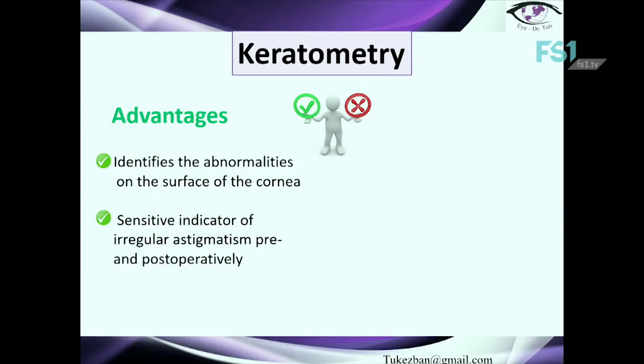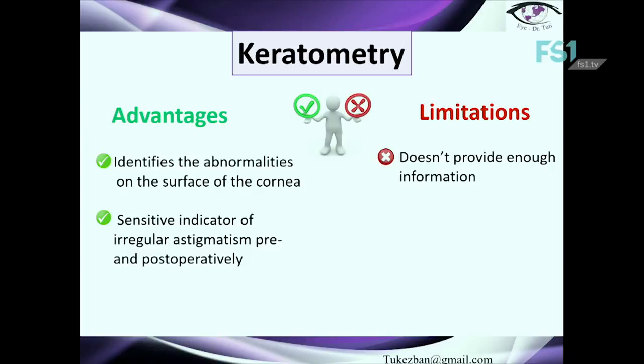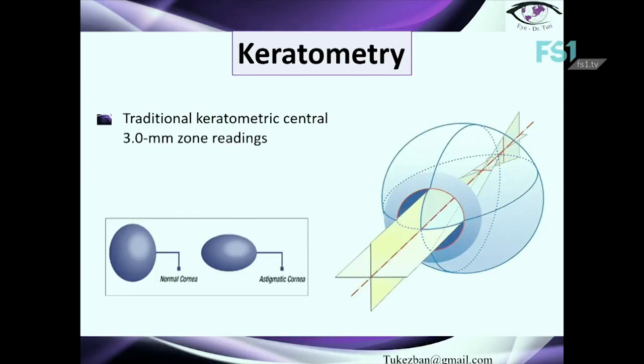The advantages of keratometry are that it identifies abnormalities on the corneal surface and is a very sensitive indicator of irregular astigmatism pre- and post-operatively. Its limitation is that keratometry alone doesn't provide enough information. It only gives us data about the central part of the cornea — specifically the keratometry power within the central 3-millimeter area, which is also known as the corneal cap or central cap.